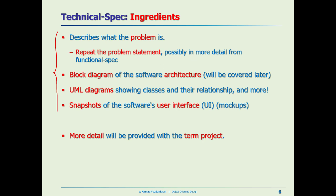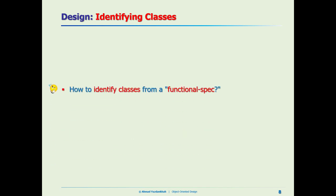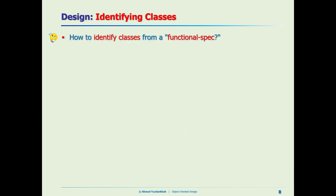We said the goals of design are: identifying classes, identifying the responsibilities or API, and identifying the relationship between the classes. Now it's time to try to identify the classes. The question is: how can we identify classes?